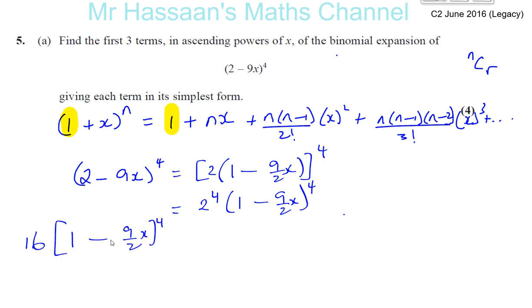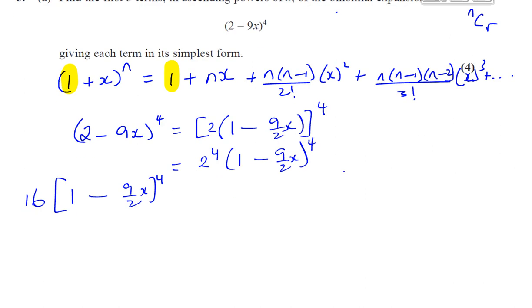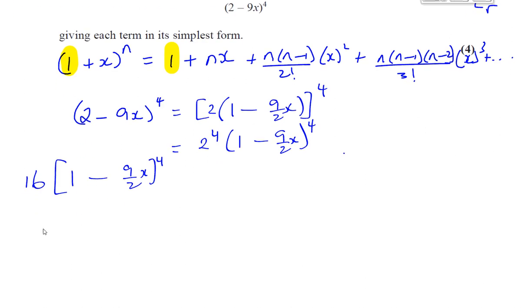So now we're going to expand this using our pattern that we've got up there. So you have 16. Always write it there otherwise you'll forget about it. Then you have 1 plus NX. N is the 4 and X is this whole term including the minus sign. So it's going to be N times X which is 4 times minus 9/2 X.